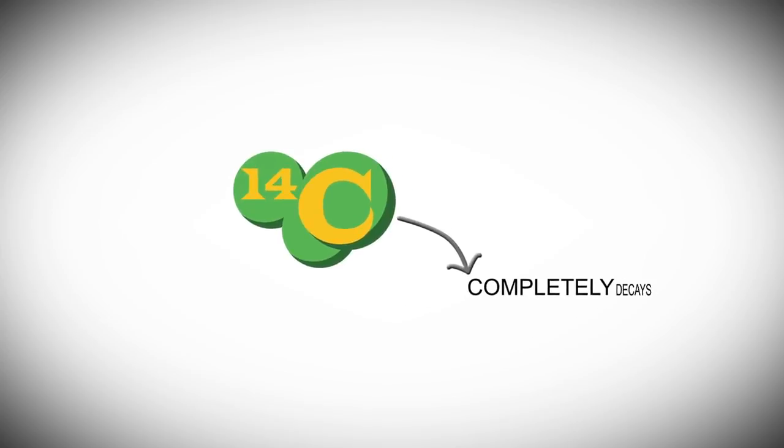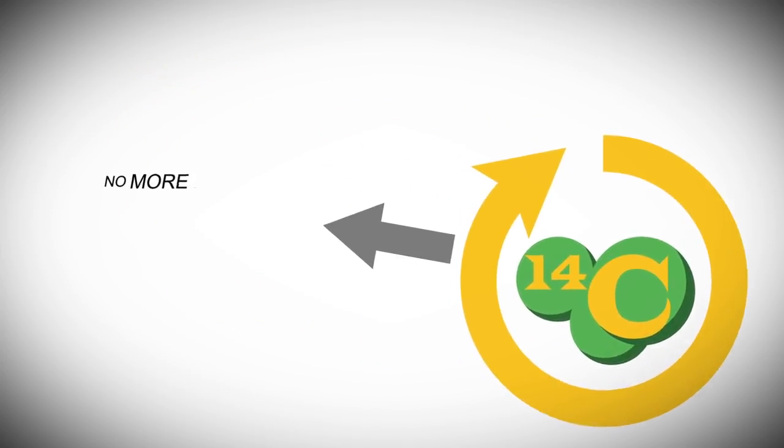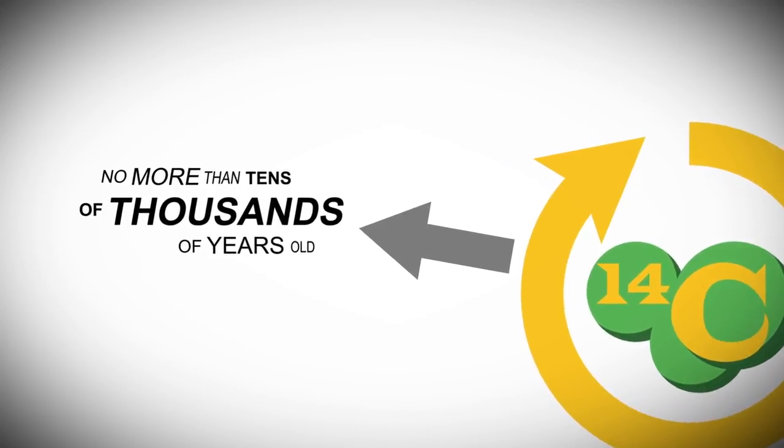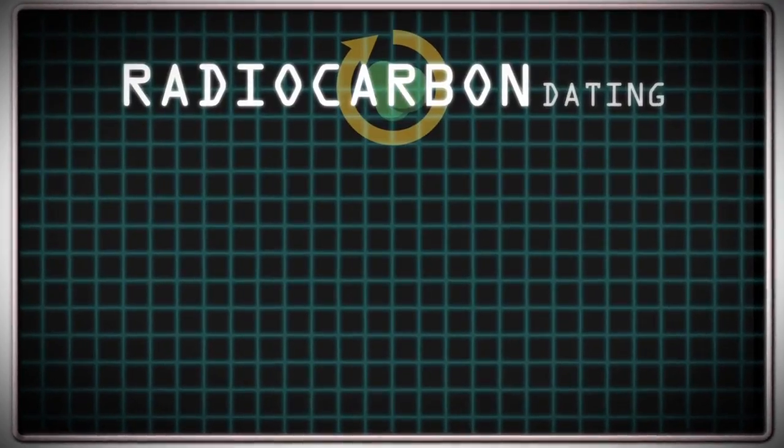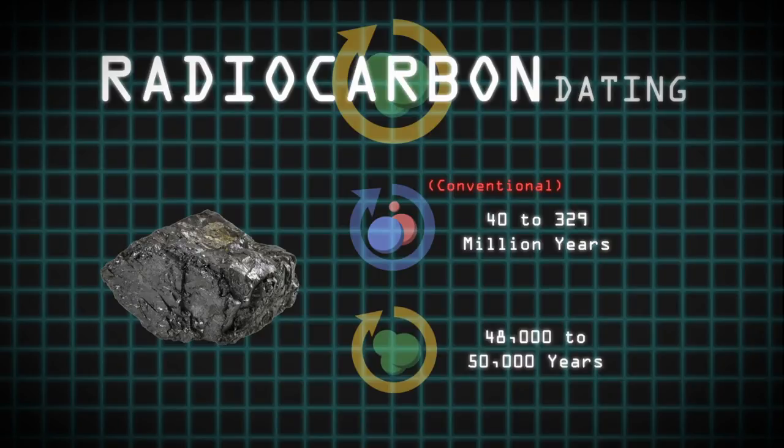Because carbon-14 completely decays in thousands of years, it should only be useful to date objects no more than tens of thousands of years old. However, using this method, scientists determined that samples from US coal beds conventionally dated at 40 to 329 million years had carbon ages of 48,000 to 50,000 years.